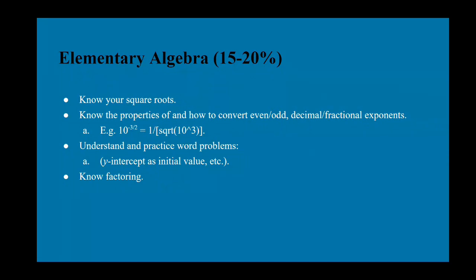Elementary algebra is 15 to 20 percent of the test. Know your square roots, which are the opposite of the perfect squares. Know how to work with exponents — negative 10 to the power of 3 (an odd exponent) gives a negative number, while a negative number to an even power gives a positive number. Fractional exponents convert to square roots: a number to the power of one-half equals the square root of that number.